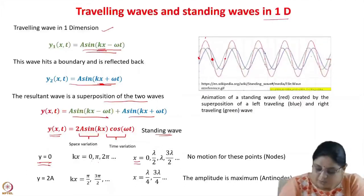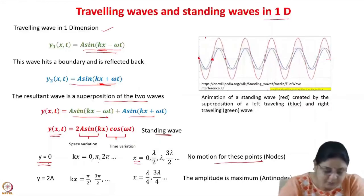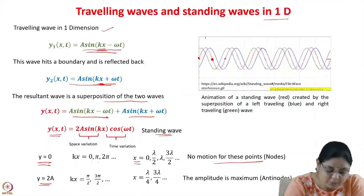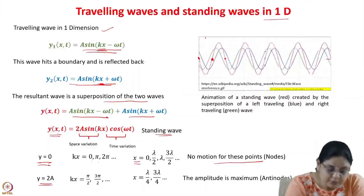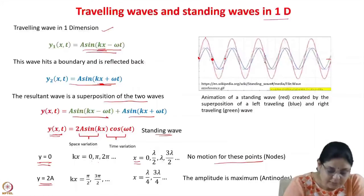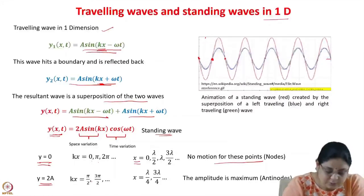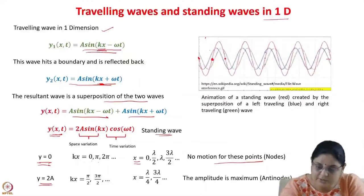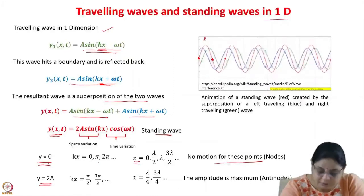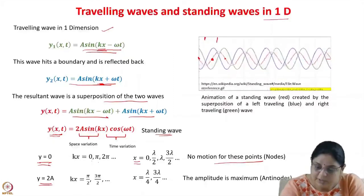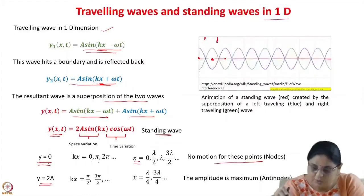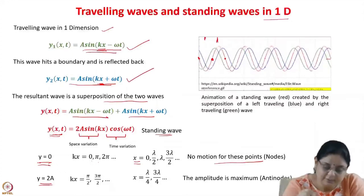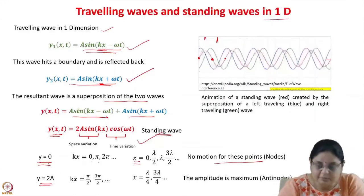Similarly, we can find the locations of antinodes where the amplitude is maximum (y = 2a). Setting kx = π/2, 3π/2, … gives x = λ/4, 3λ/4, and so on. This completes the comparison: the travelling wave and the standing wave.